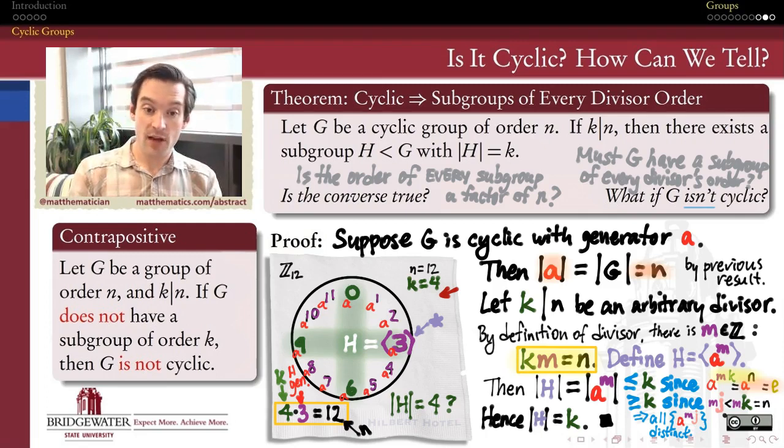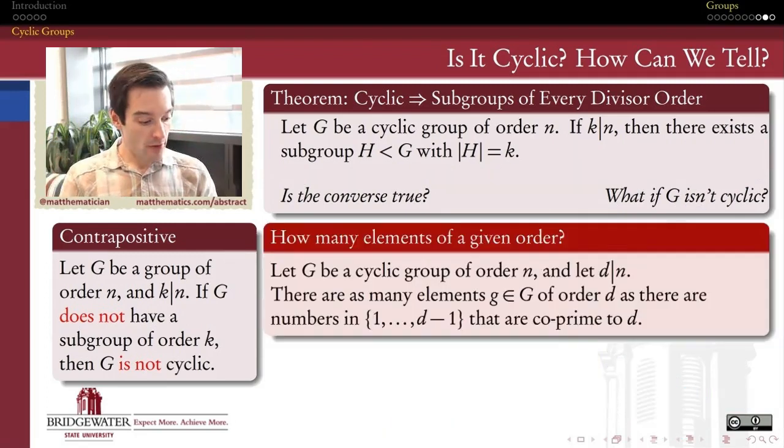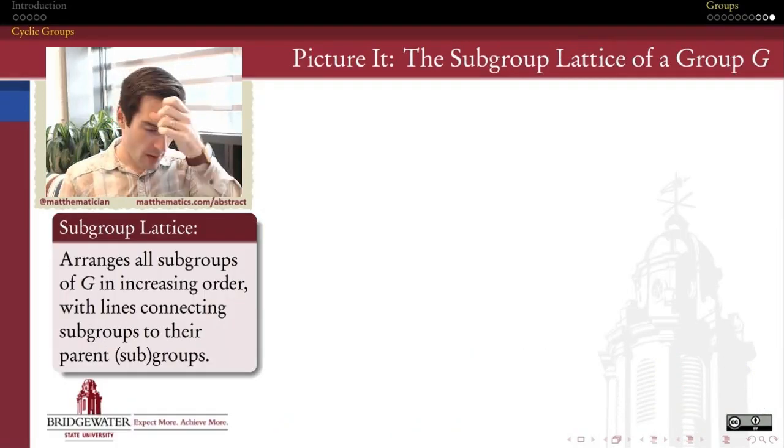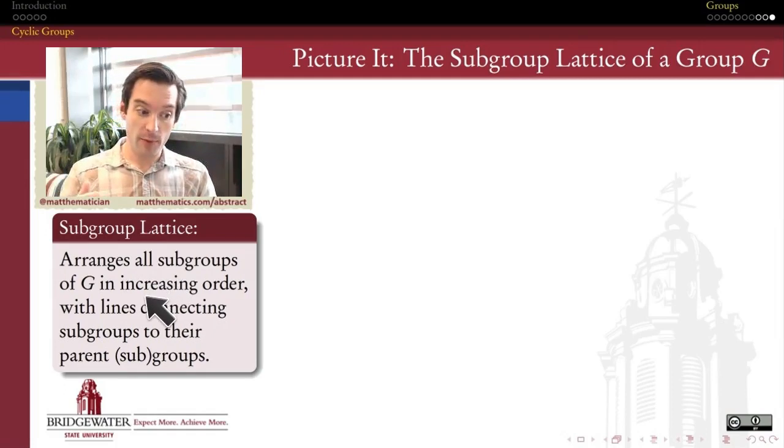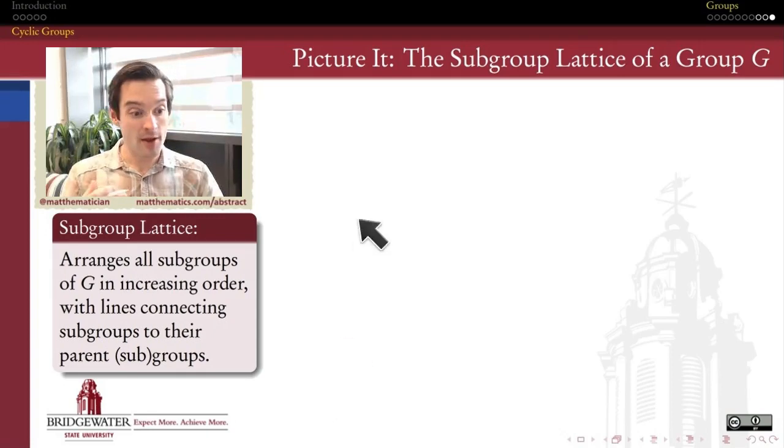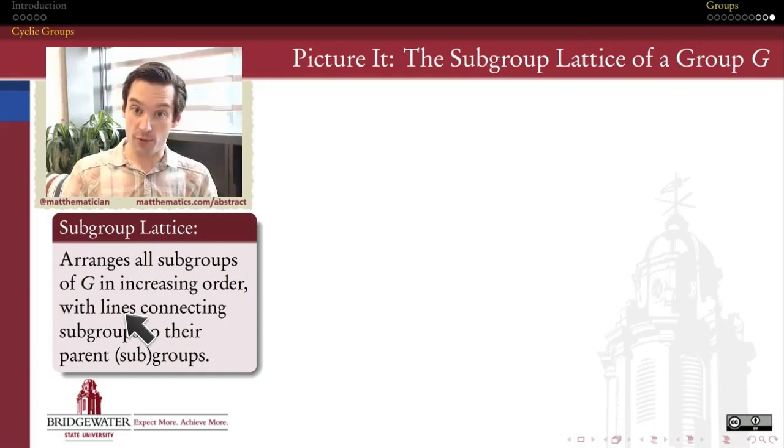What this allows us to do now is come up with a picture that we call a subgroup lattice, that we can use to visualize all of the subgroups of a cyclic group and also show how those subgroups relate one to another. We take all the subgroups of our cyclic group and arrange them in increasing order of their orders. We also draw lines in this lattice that connect subgroups to their parent subgroups, showing what's contained in what. These are subset relationships, but they also turn out to be subgroup relationships.